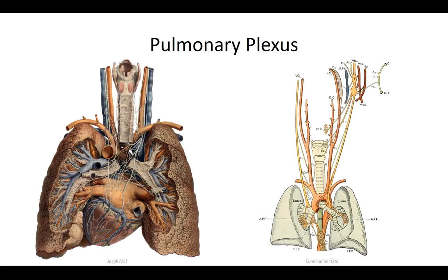The final entity to discuss is the nerve supply to the lungs. These are derived from the pulmonary plexus that enters the hilus of the lung posteriorly. This nerve plexus is a convergence of sympathetic fibers branching from the sympathetic chain, parasympathetics from the vagus nerve, and visceral afferents that branch from the intercostal nerves to detect pain within the lung tissue.